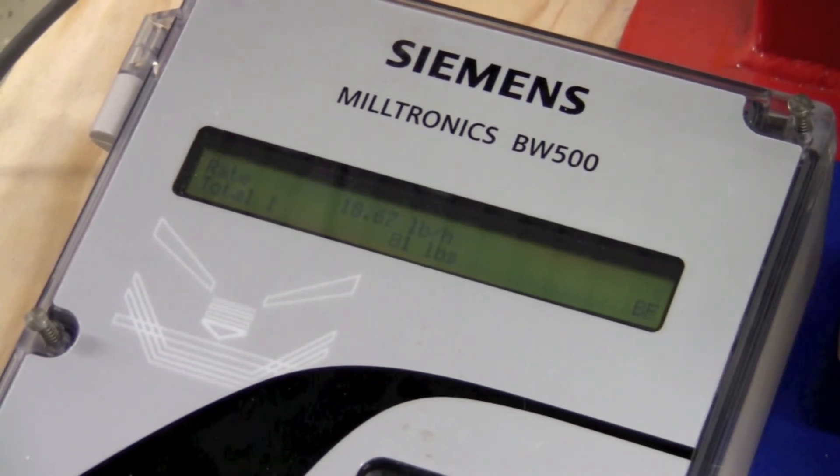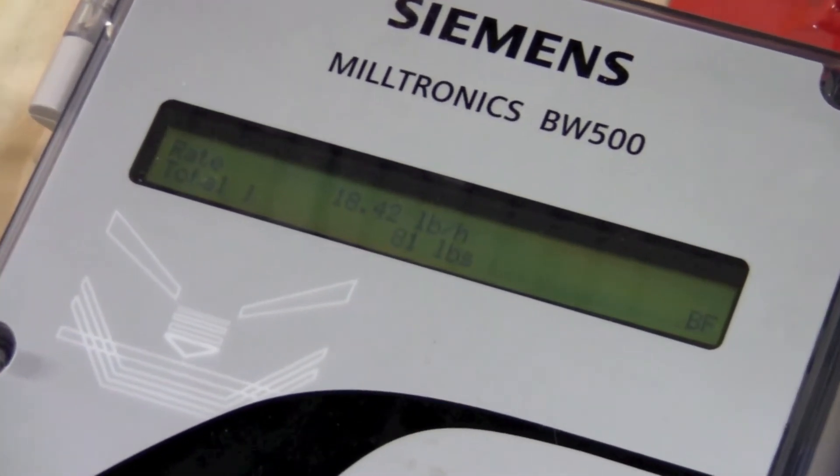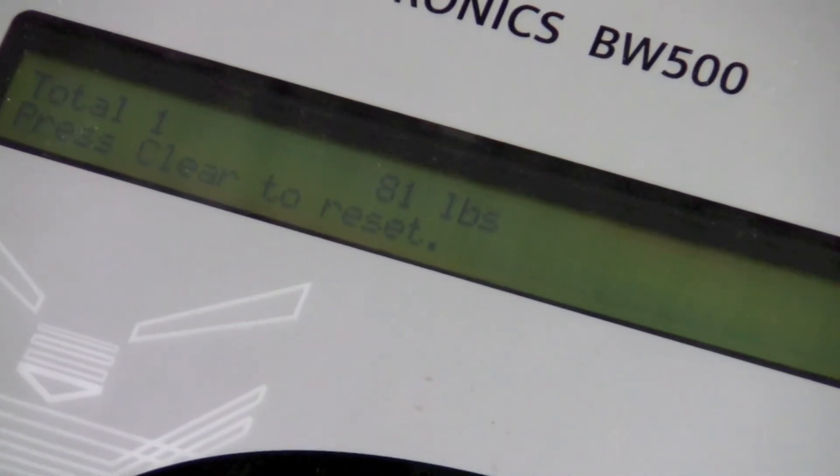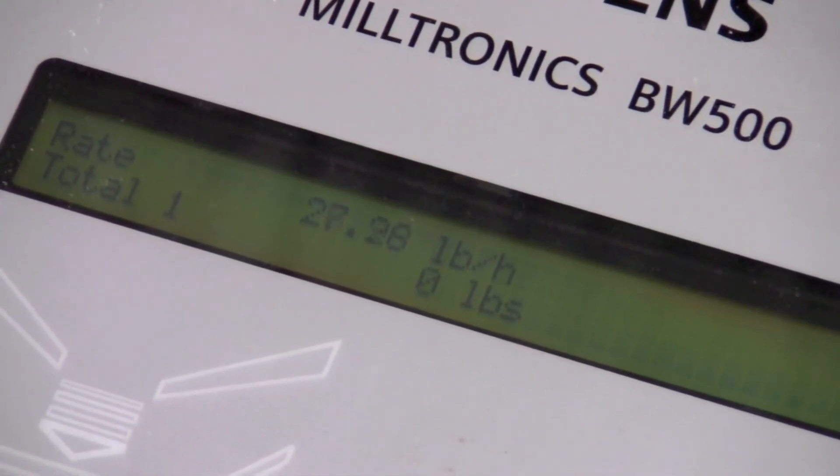From the run button, we can change your total or reset your total by pressing reset total, clear, and then ALT display to return back to run mode.